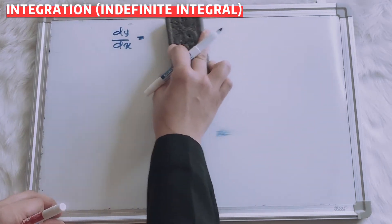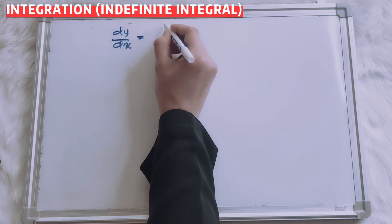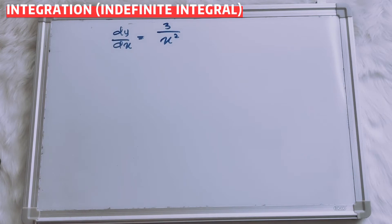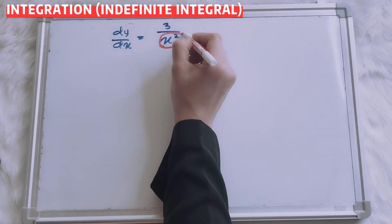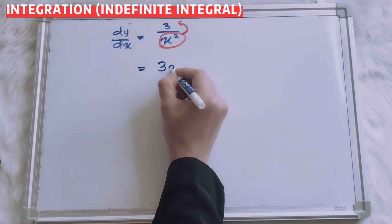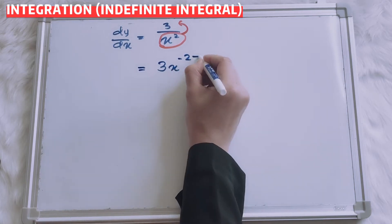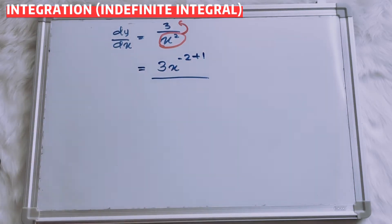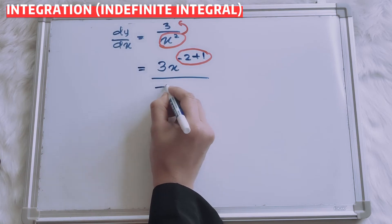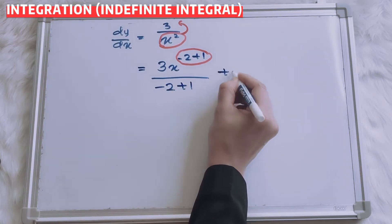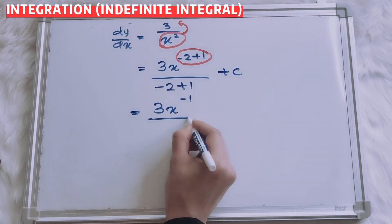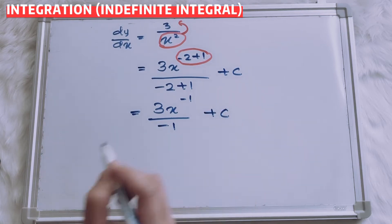Let's say I give you 3 over x to the power of 2. So you have to bring x to the top. Now you will have 3x to the power of negative 2 plus 1, over negative 2 plus 1, plus C. So you have 3x to the power of negative 1, over negative 1, plus C.